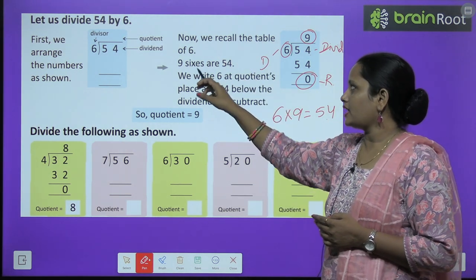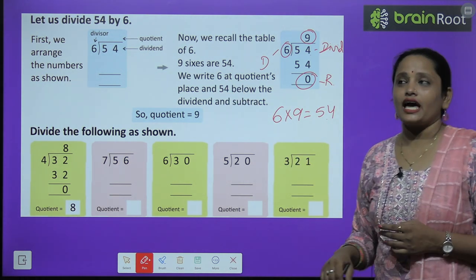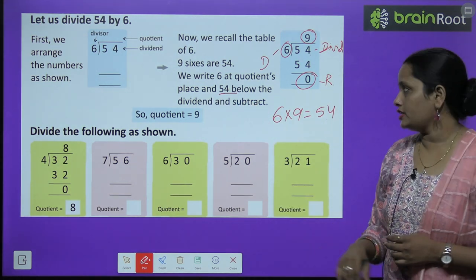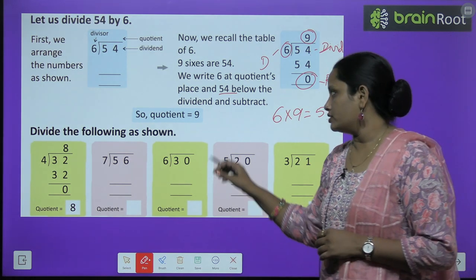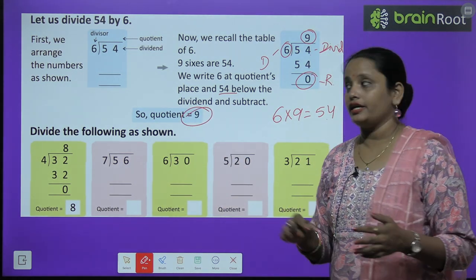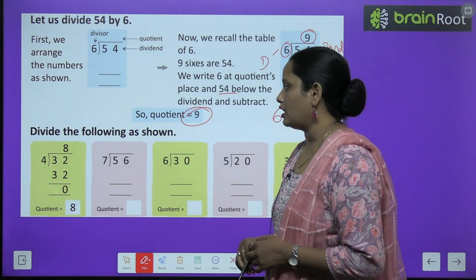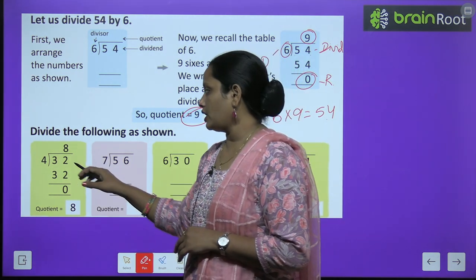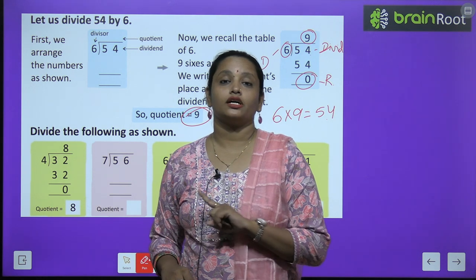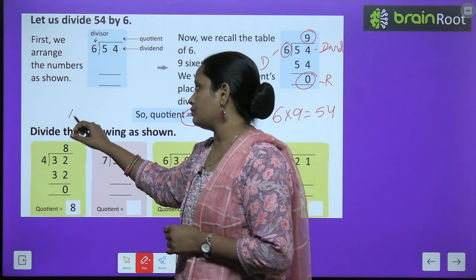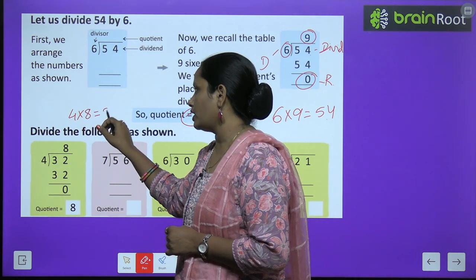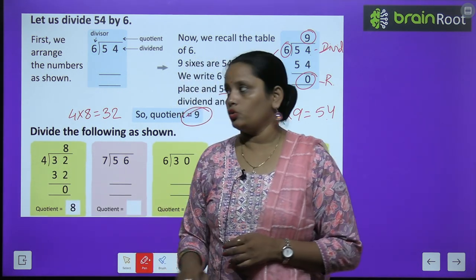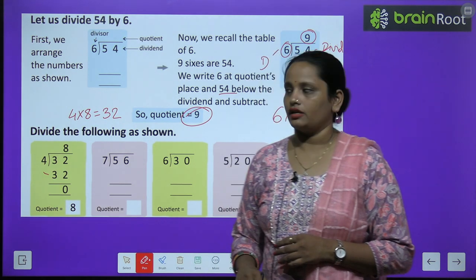So now we recall the table of 6: 9 sixes are 54. Rewrite 6 as the quotient, write 54 below the dividend and then subtract. Now here is another number: we had to divide 32 by 4. So we read the table of 4 until the answer 32 comes. When I read the table of 4, I found that 4 eights are 32.